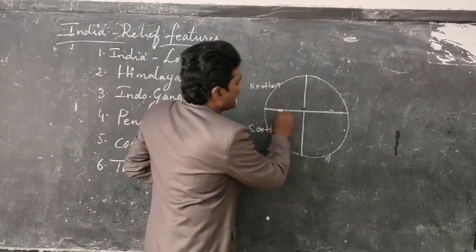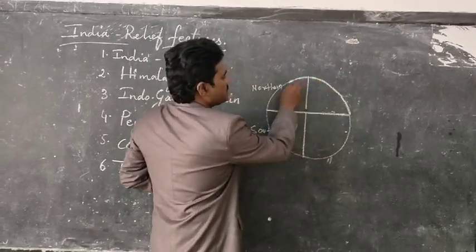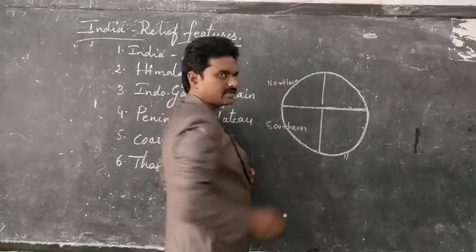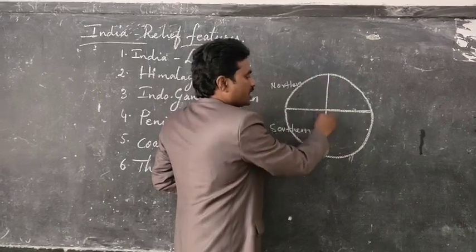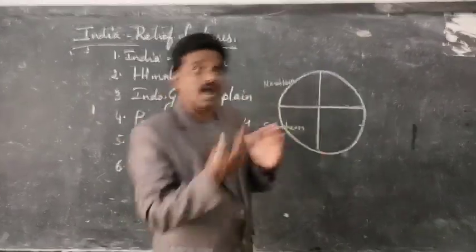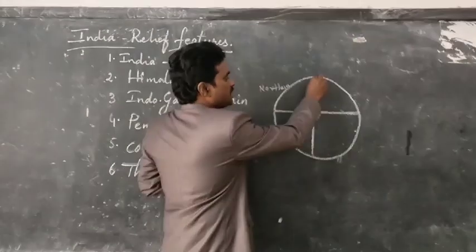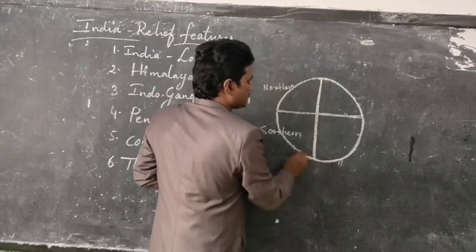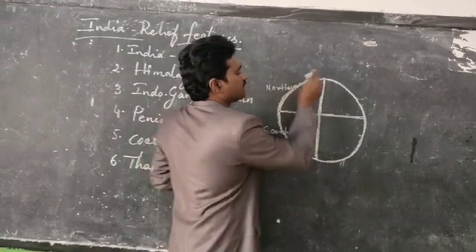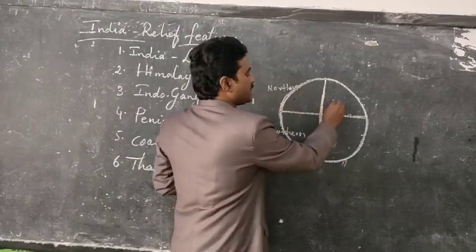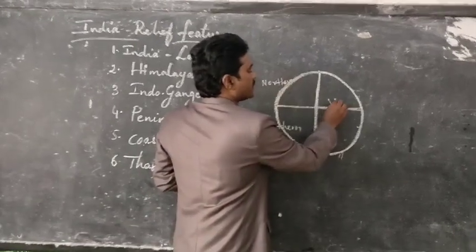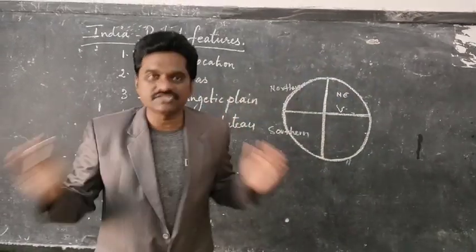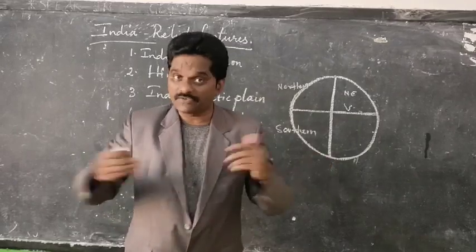One hemisphere is called the northern hemisphere and the other is called the southern hemisphere. The zero degree longitude divides the world into two other hemispheres — the eastern hemisphere and the western hemisphere. So India is located in the north-eastern hemisphere.